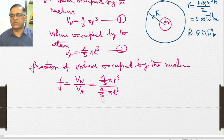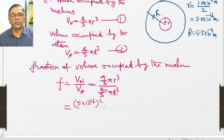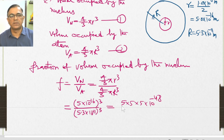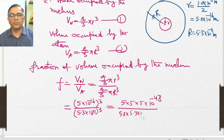Substituting these values: the fraction equals (5 × 10⁻¹⁶)³ divided by (5.3 × 10⁻¹¹)³, which equals 5 × 5 × 5 × 10⁻⁴⁸ divided by 5.3 × 5.3 × 5.3 × 10⁻³³.